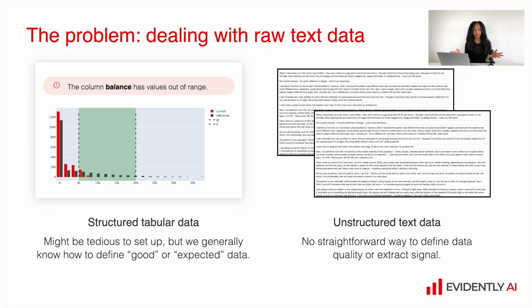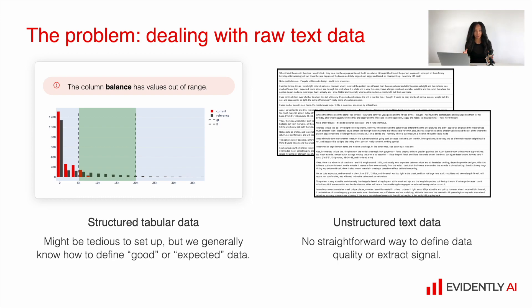The problem is that dealing with raw text data is not as straightforward compared to structured data. When it comes to monitoring data quality for structured data, we have quite enough rules on how to do that. For example, some features should have a particular distribution, particular statistics values like mean, max, or range. Some categorical features should have some percentage for each category, so we can derive a lot of rules for structured data.